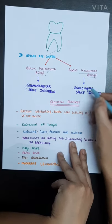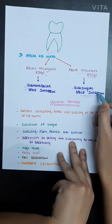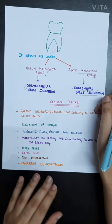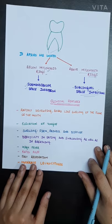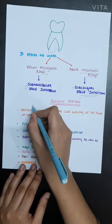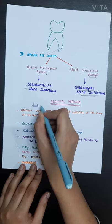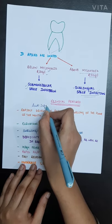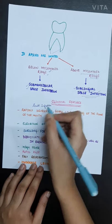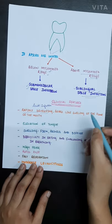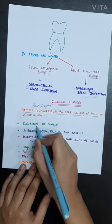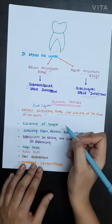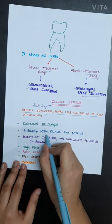The clinical features of Ludwig's angina: as we know, Ludwig's angina is an acute infection, so it will be rapidly developing. There will be board-like swelling of the floor of the mouth, due to which elevation of the tongue will be seen. The swelling is basically very firm, painful, and diffuse, with difficulty in eating.